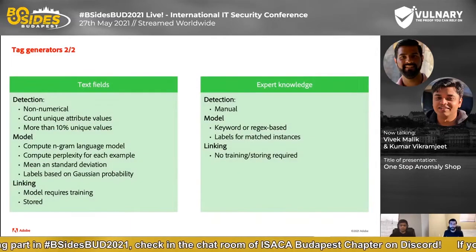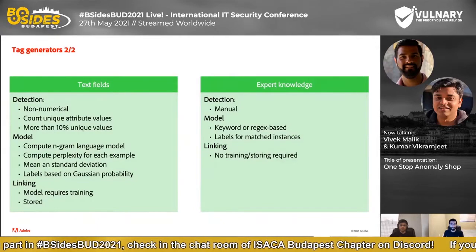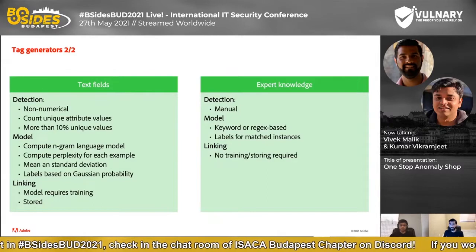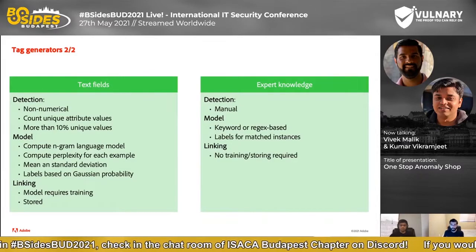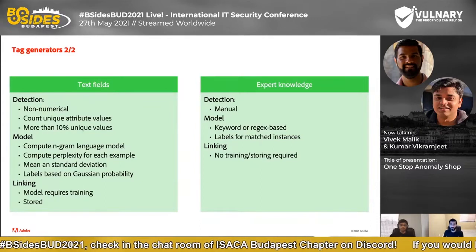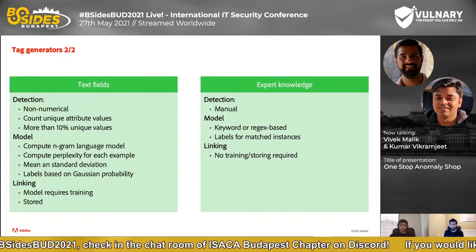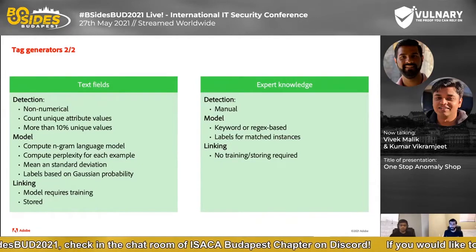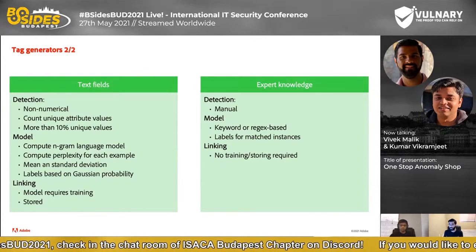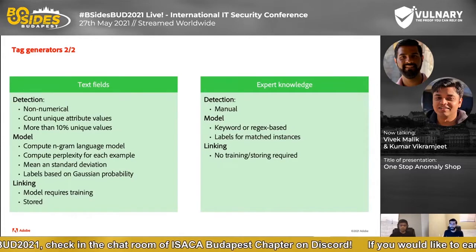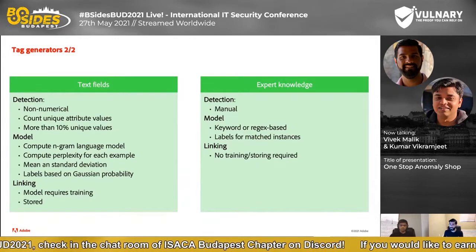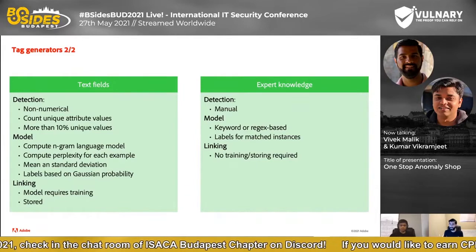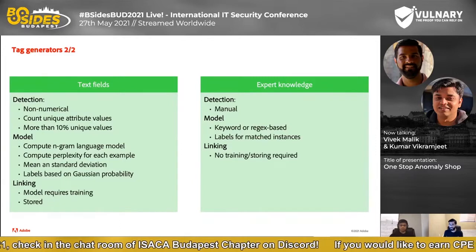Text fields are non-numerical with more than 10% unique values. You can compute algorithms such as an n-gram language model, compute perplexity of each example, mean or standard deviation, and label-based Gaussian probability. Finally, expert knowledge: detection is manual in this case, and the models you run are keyword or regex-based. Labels are generated for matched instances.